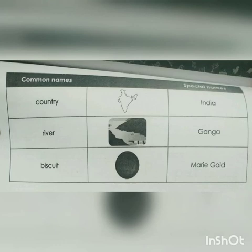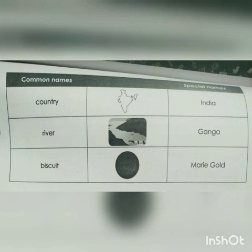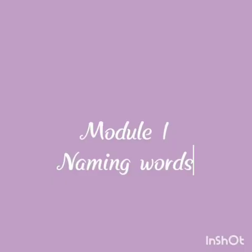Same like a river — river is a common name, but there are special names for river, so many names are there, like Ganga, Yamuna. Biscuit — your favorite one! Biscuit is a common name, but there are special names: Marigold, Parle-G, 50-50, Crackjack. That is a special name — naming words.